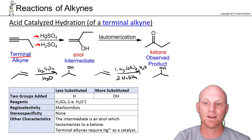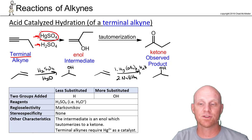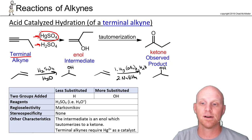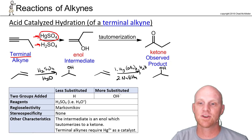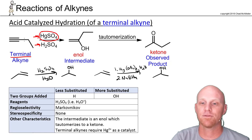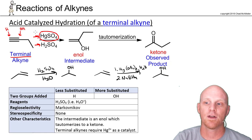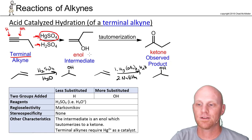With a terminal alkyne we absolutely need the mercury. With an internal alkyne, you can get away with just using aqueous H2SO4, or H3O+. In both cases, you're adding an H and an OH in Markovnikov fashion — the H on the less substituted side and the OH on the more substituted side.